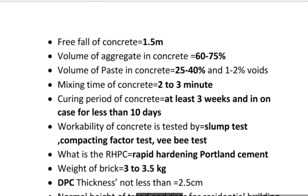First question: free fall of concrete is 1.5 meters. Volume of aggregate in hardened concrete is 60 to 75%, volume of paste is 25 to 40%, and voids is 1 to 2%.